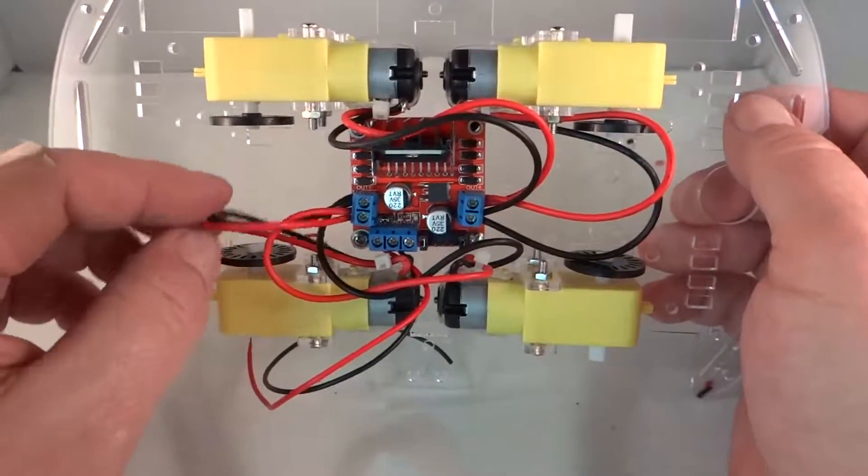So, now when you look at the diagram for this H-bridge motor controller, you'll see these two ends are enable pins. And then the other four are the direction control pins.